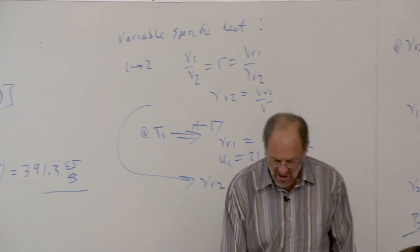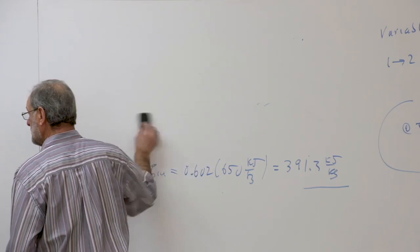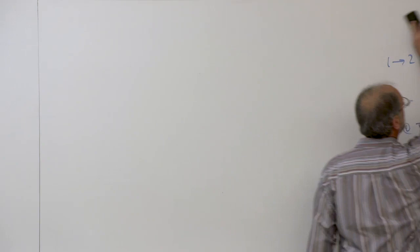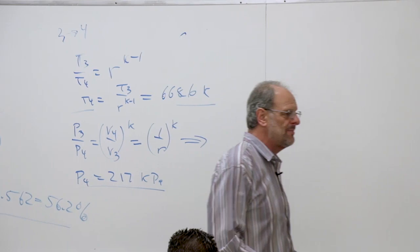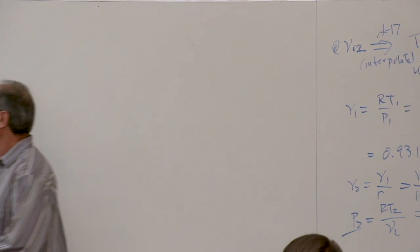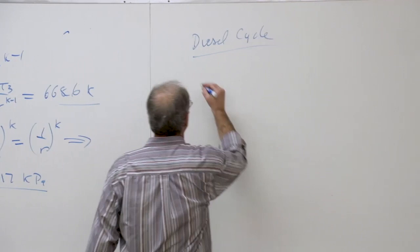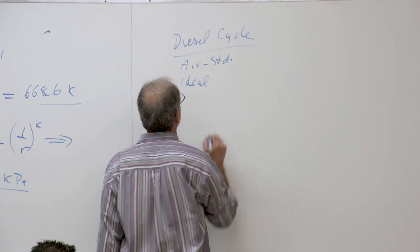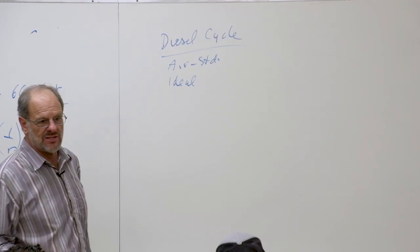This brings us to our second reciprocating engine cycle: the diesel cycle. The diesel cycle is different from the Otto cycle but is still an air standard cycle. All work processes are still considered isentropic. The key difference is the way heat transfer takes place.